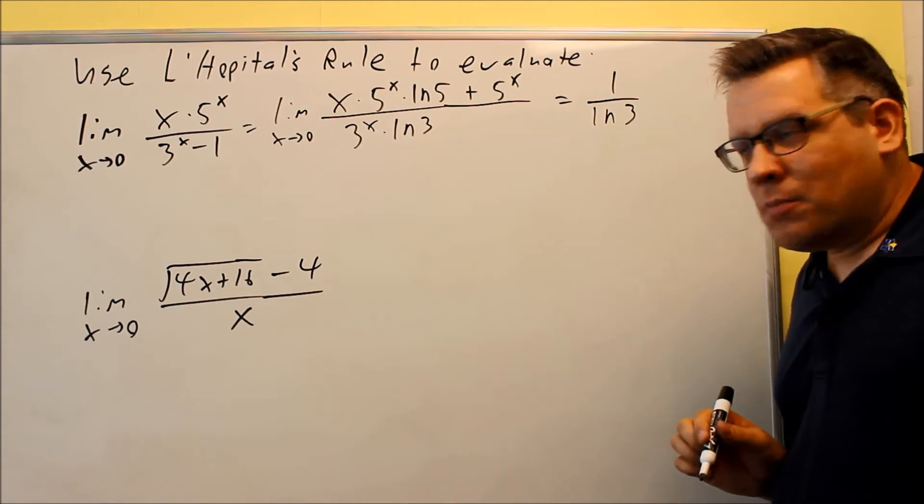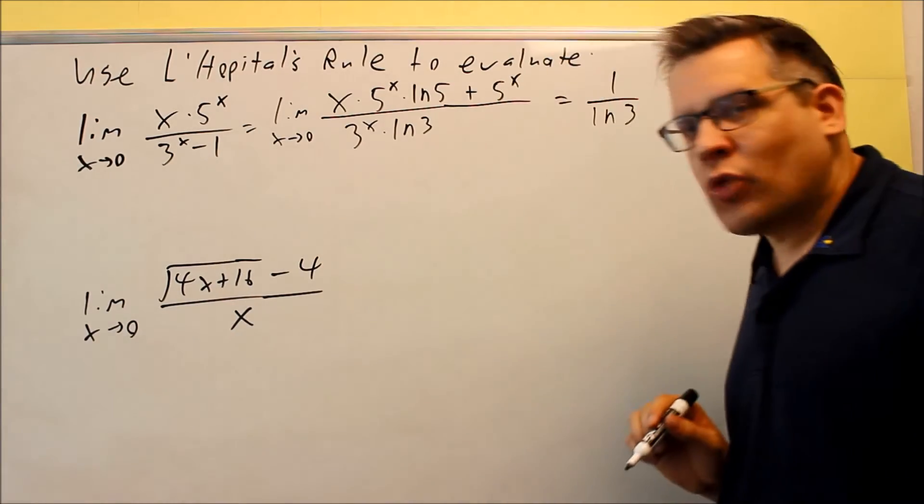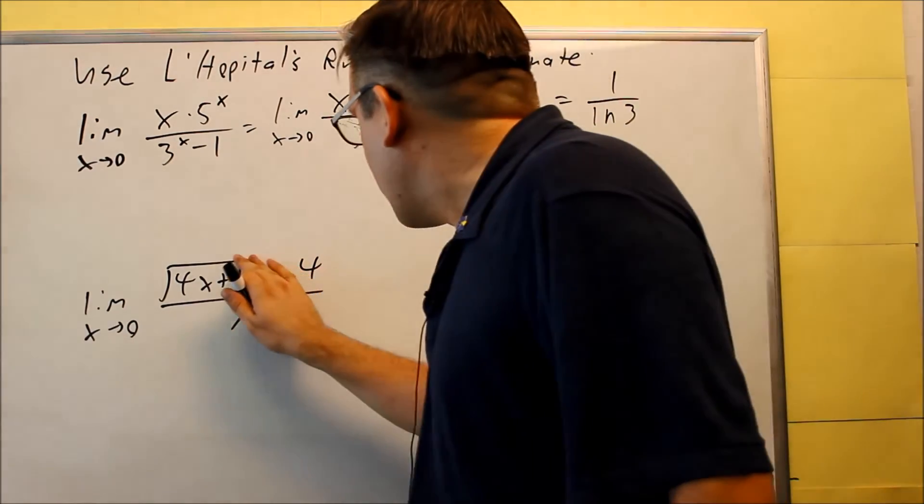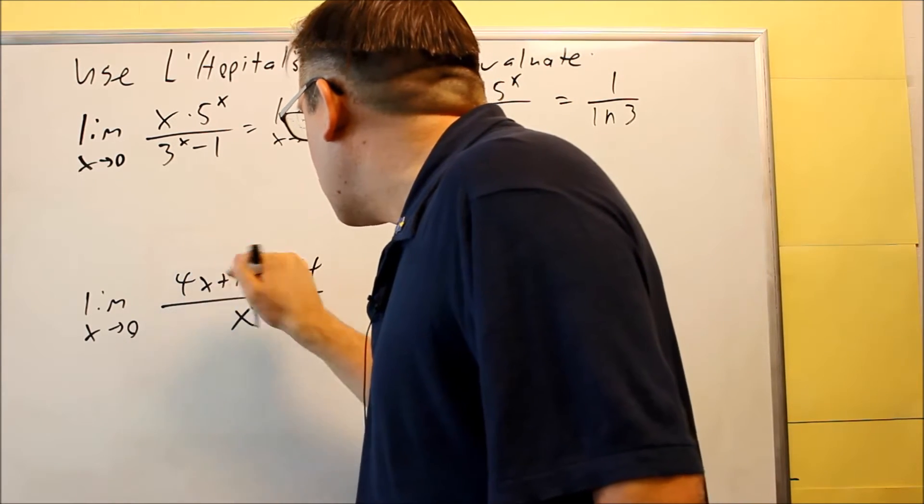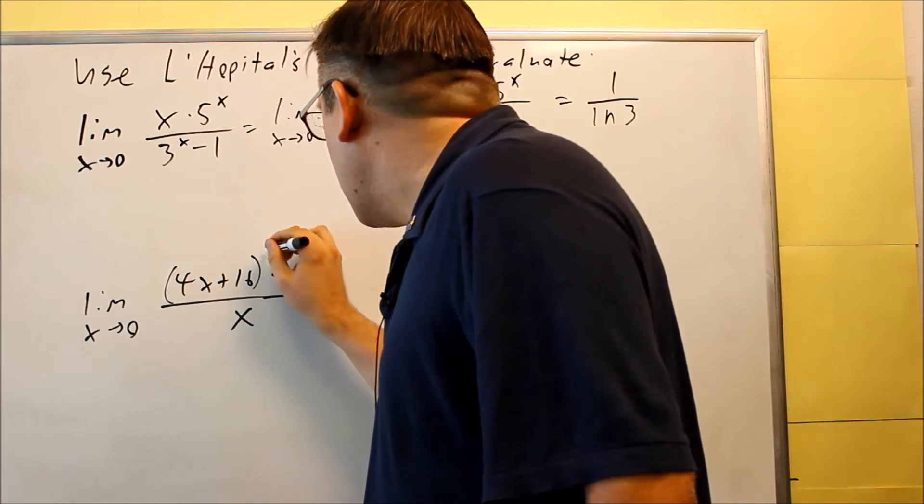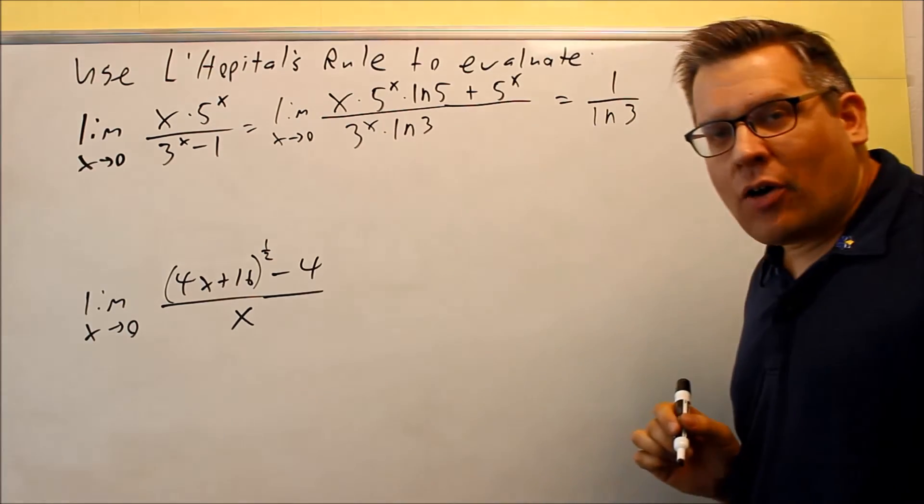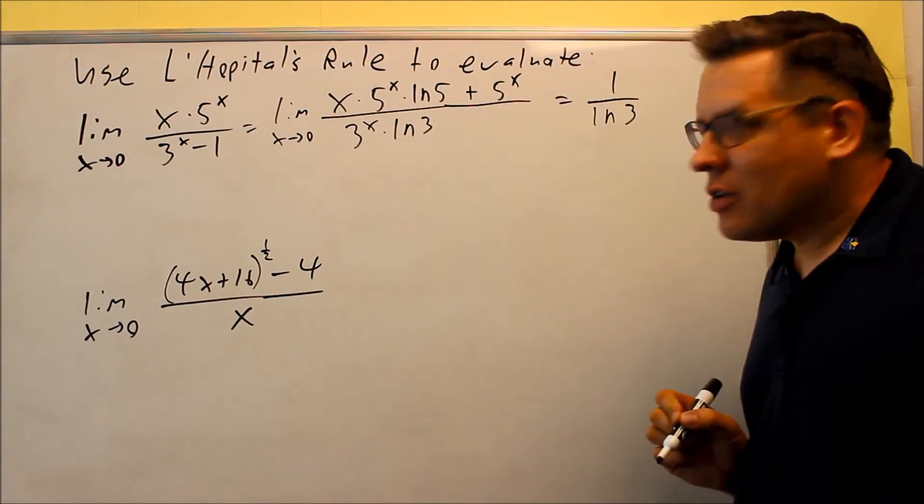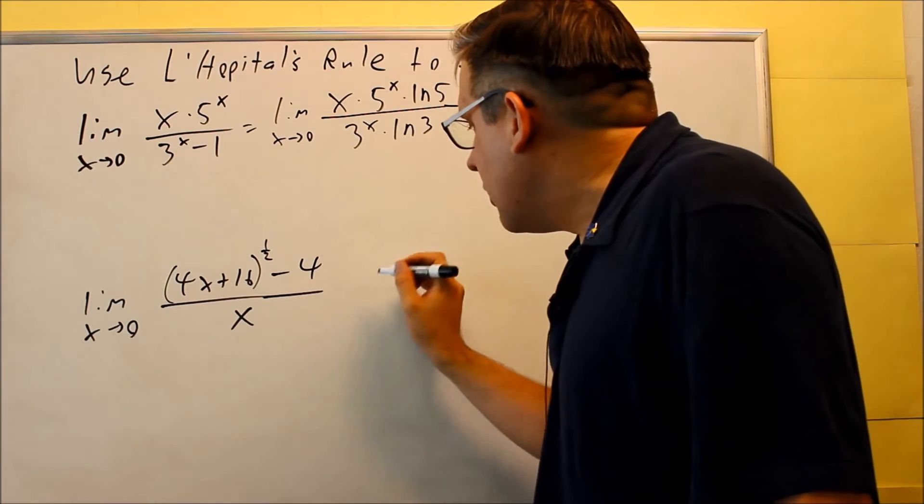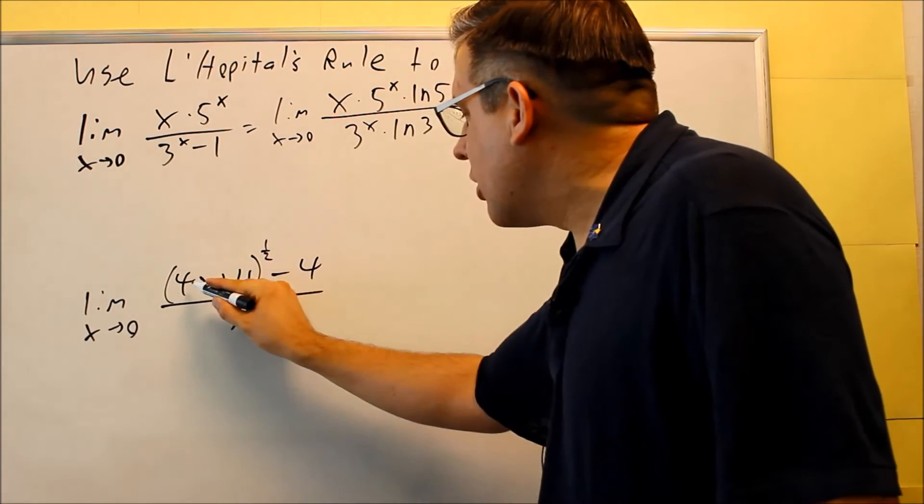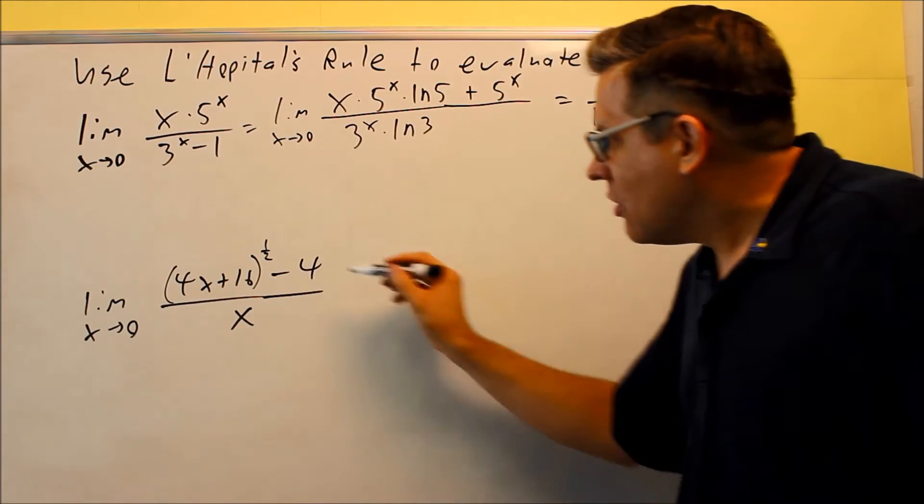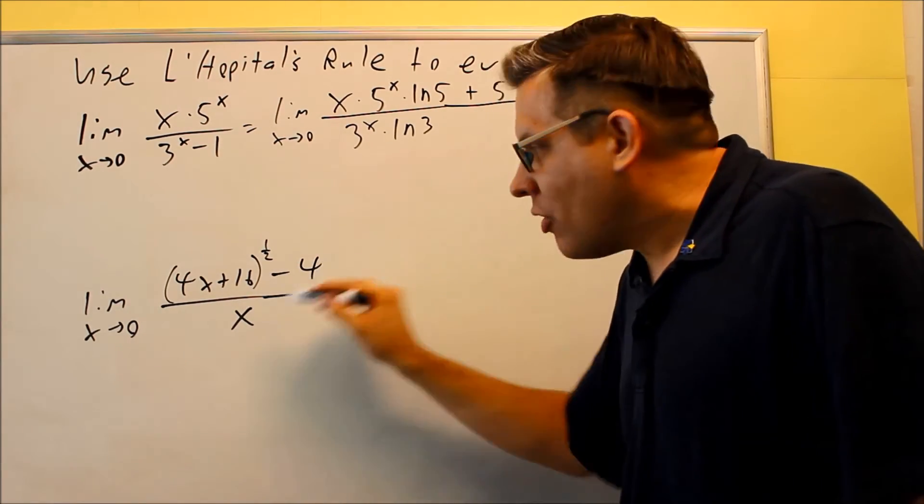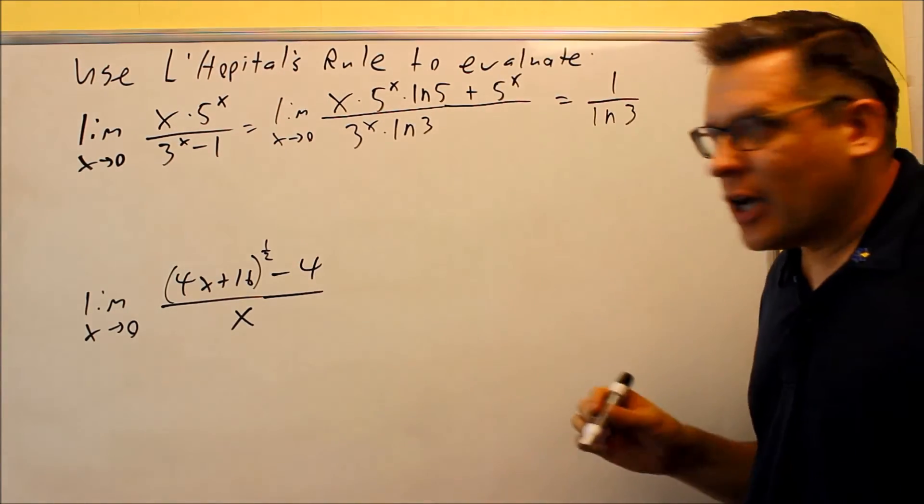Now let's look at the second problem. We have a square root here. Instead of rewriting the problem, I'll change this into a 1/2 power so I can apply the chain rule. If I put 0 in here, I get √16, which is 4 minus 4 equals 0, and 0 on the bottom. Again, I can apply L'Hôpital's Rule.